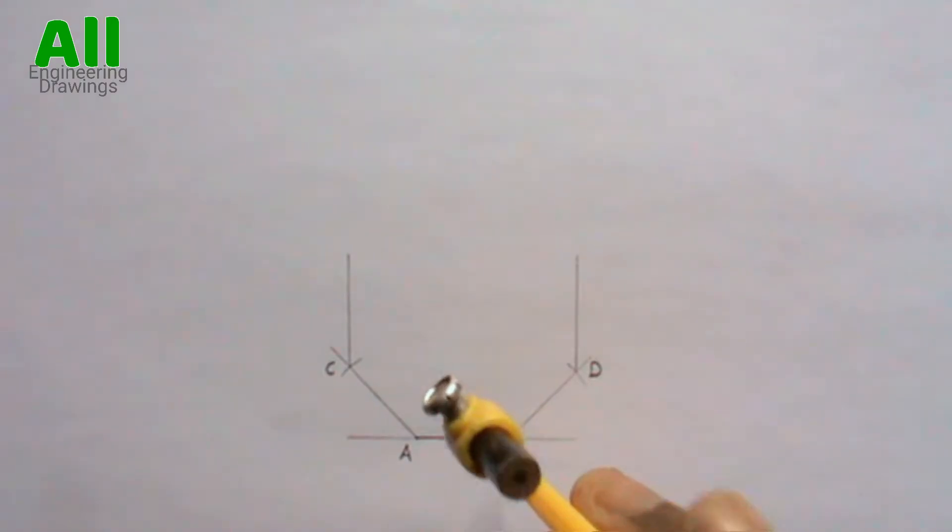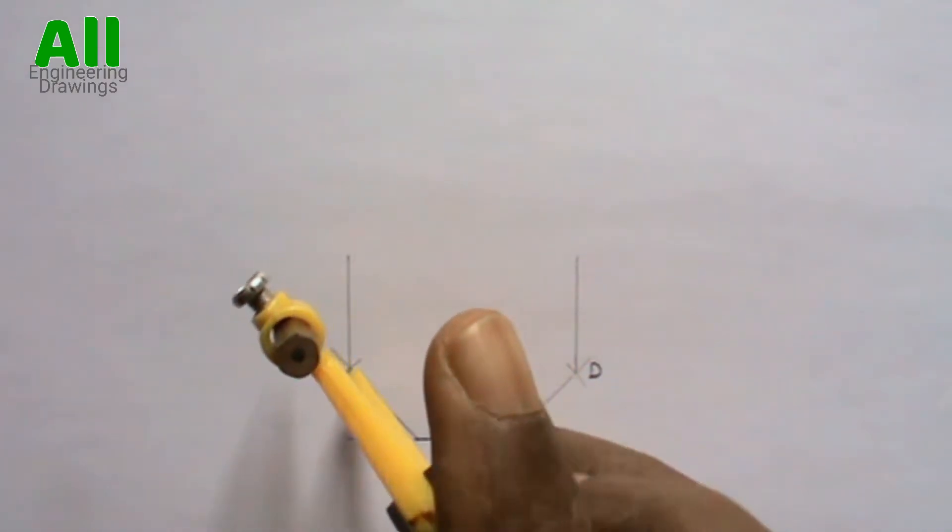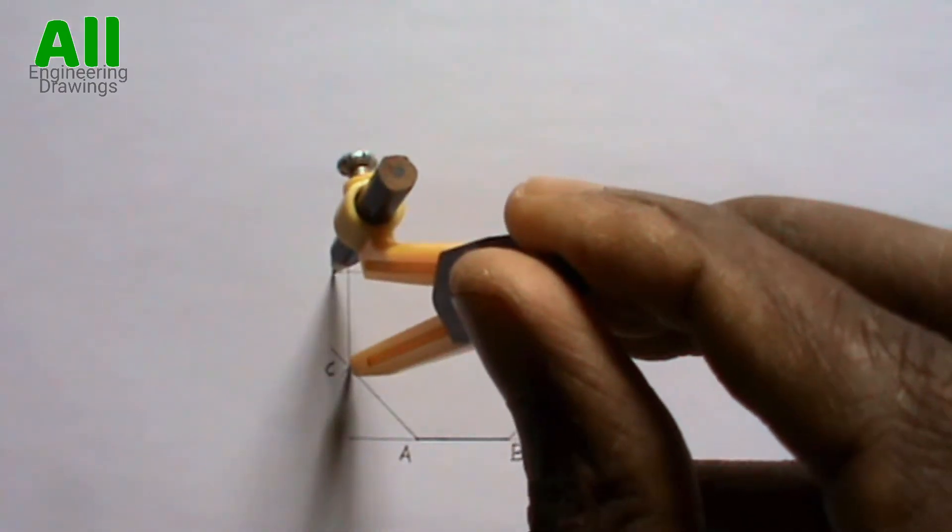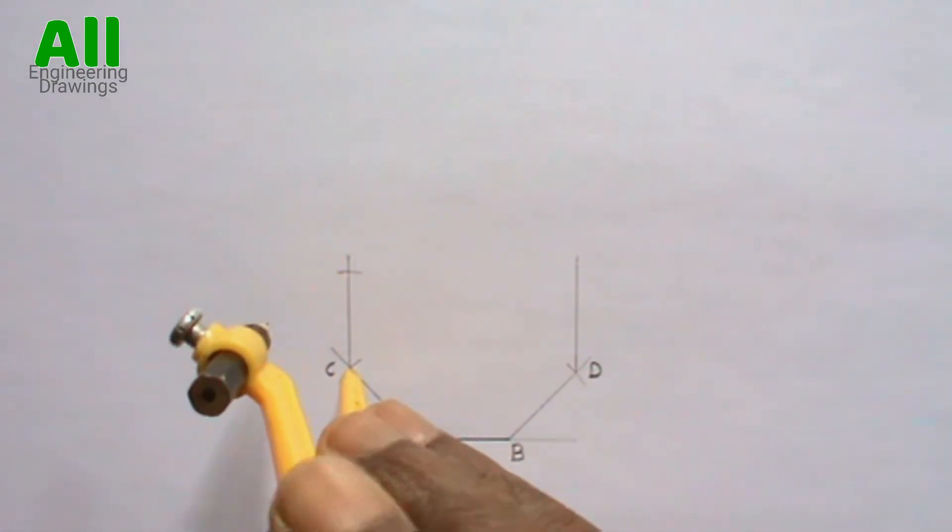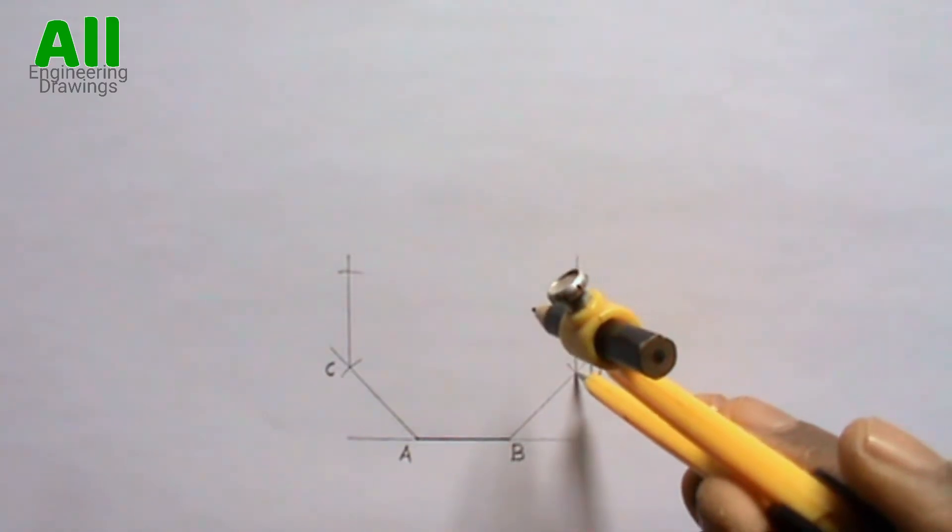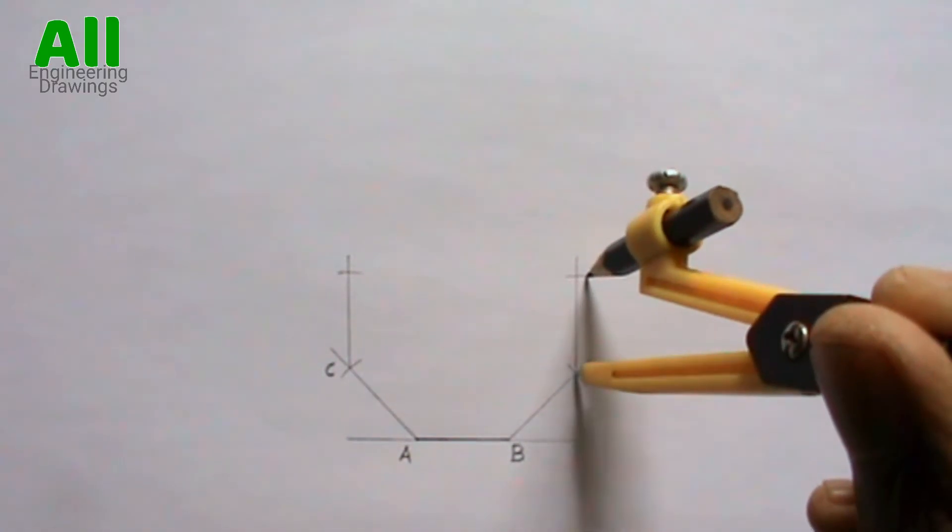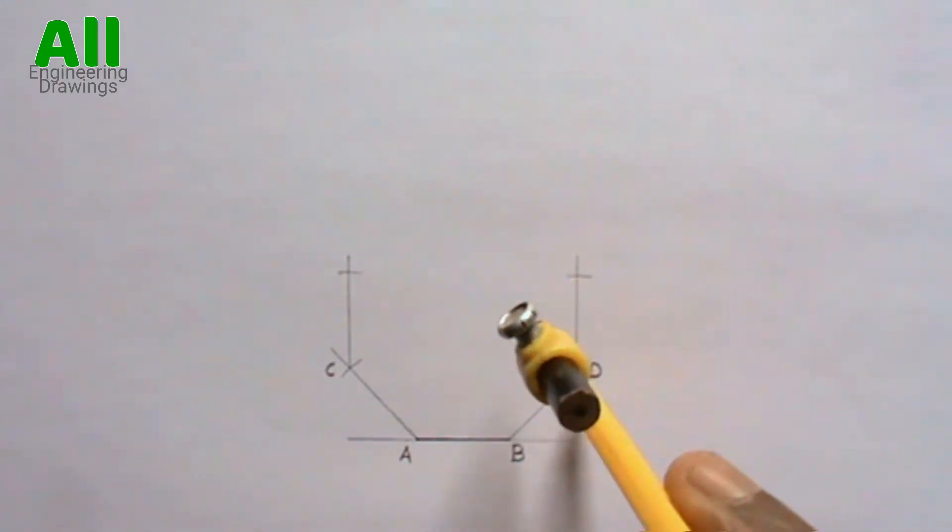Then place your compass on point C, cut an arc on the vertical line. Also place your compass on point D, then cut an arc on the vertical line. Label the points where the arc cut through the vertical lines.